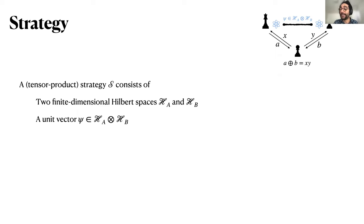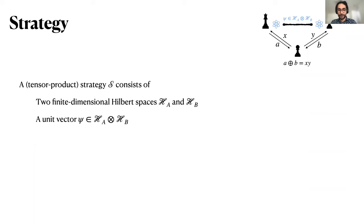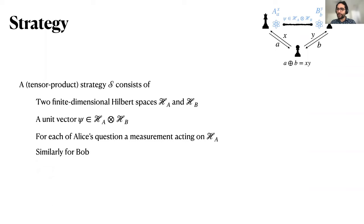Let's talk about strategies that Alice and Bob can employ to play the CHSH game. A tensor product strategy, which is the main type of strategy we're going to see in this talk, consists of the following: two finite dimensional Hilbert spaces H_A and H_B, a unit vector psi in the tensor product of these two Hilbert spaces, and for each of Alice's questions, a measurement acting on her Hilbert space H_A, and similarly a measurement for every one of Bob's questions.